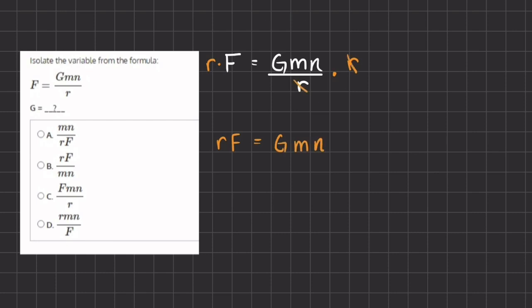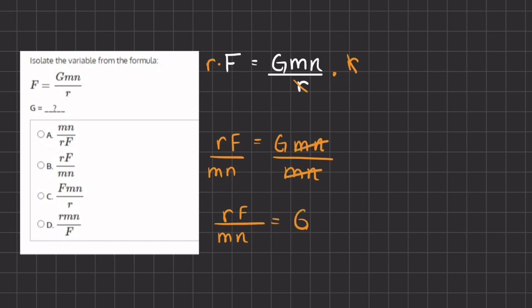Now we want to divide both sides by mn in order to get rid of the mn coefficients of g. So if we do this, we have rf divided by mn equals g, because these two will cancel out. So g equals rf divided by mn, and that corresponds exactly with answer b.